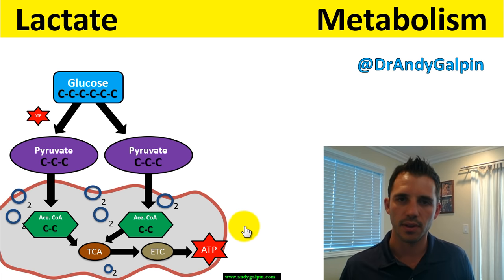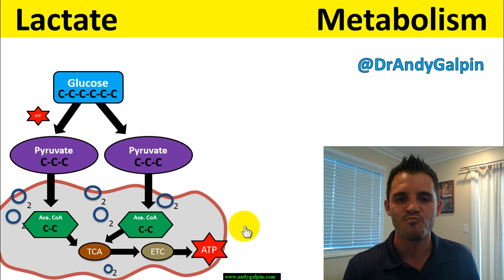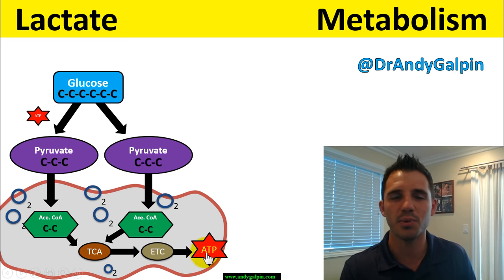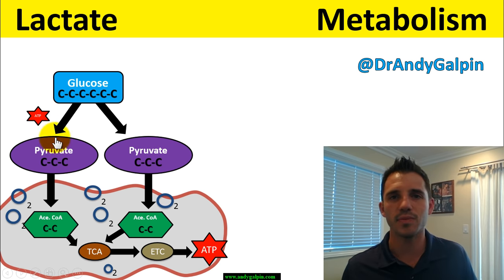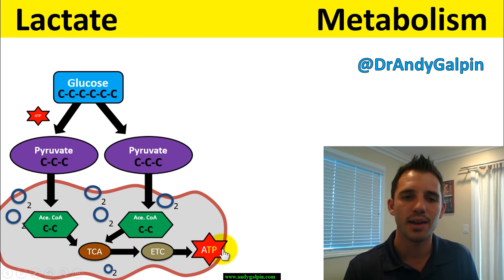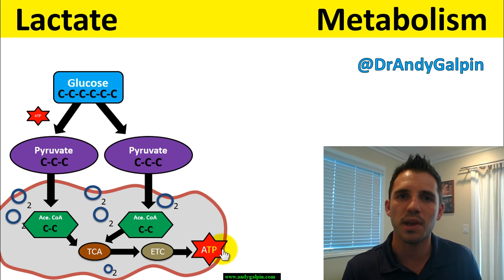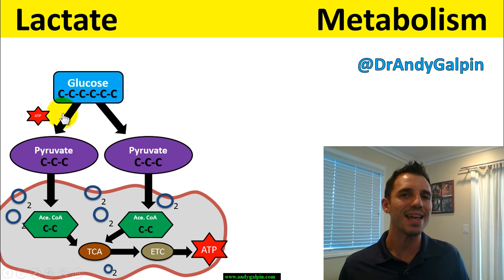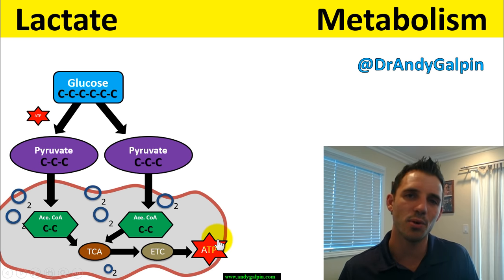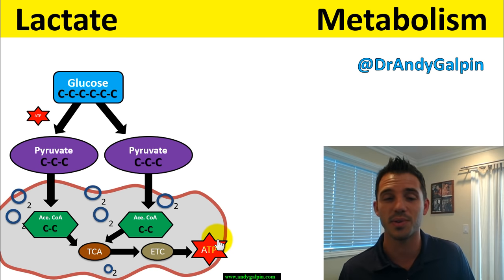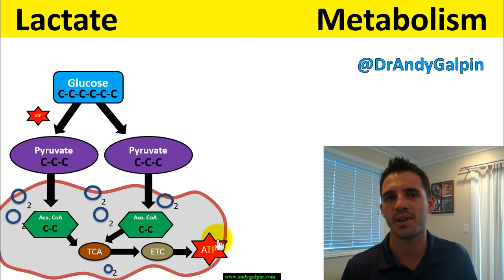This image is actually a bit deceiving because the ATP molecule from aerobic metabolism should be about 10 times the size of the one from glycolysis — we generate maybe 2, 3, or 4 ATP from glycolysis, but something like 40 from aerobic metabolism. It's 10 to 20 times the ATP. So we're really not trying to generate ATP from anaerobic glycolysis; we're trying to generate pyruvate so we can generate acetyl-CoA and go through the citric acid cycle.